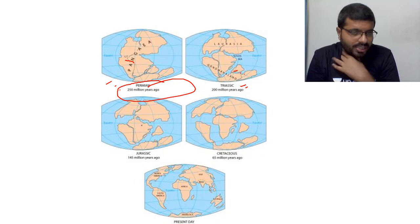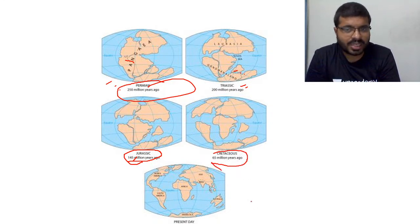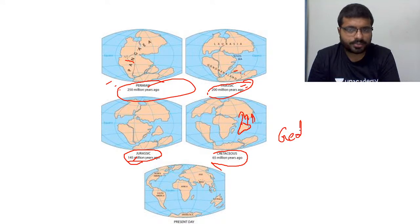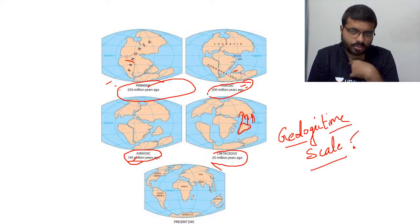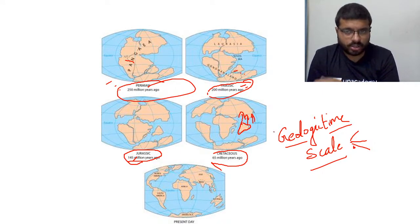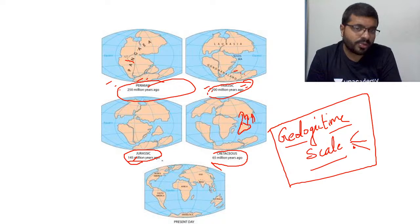Reviewing the geological timeline: Pangea started splitting in the Triassic period around 200-250 million years ago. In the Jurassic period, around 145 million years ago, the drift became more pronounced. In the Cretaceous period, around 65 million years ago, there is more resemblance to the present, though India was still in the southern hemisphere. Today we have the current continental arrangement.